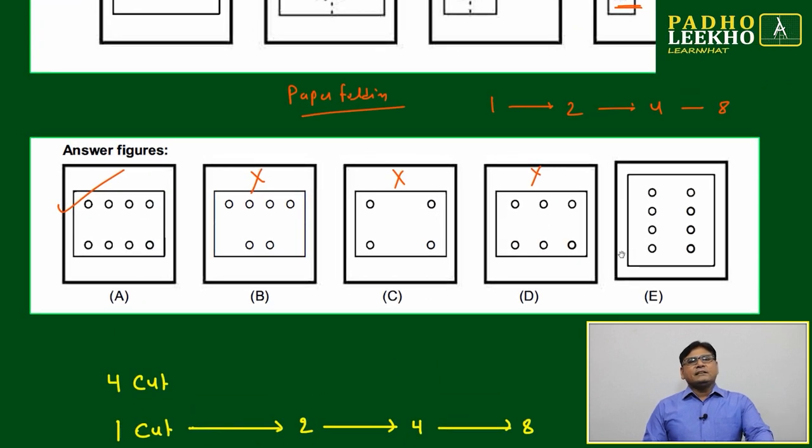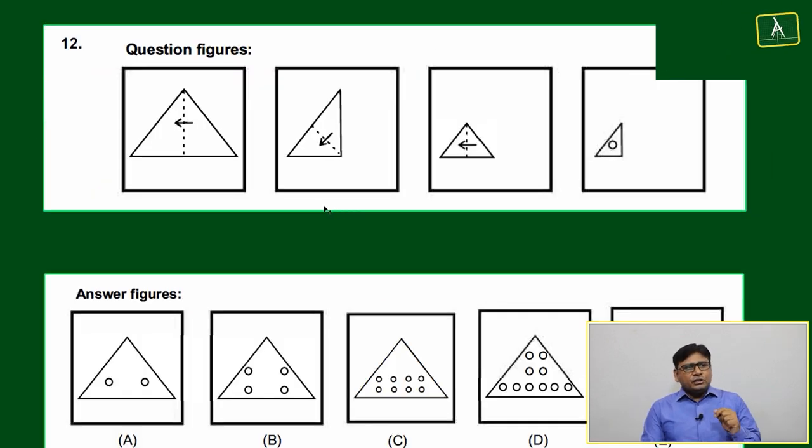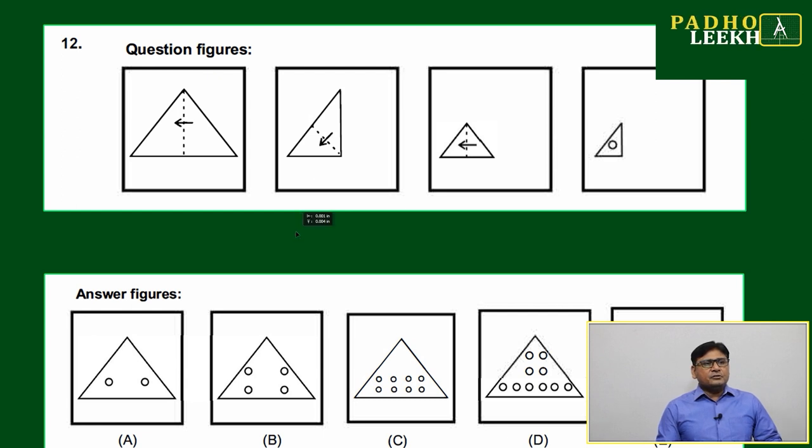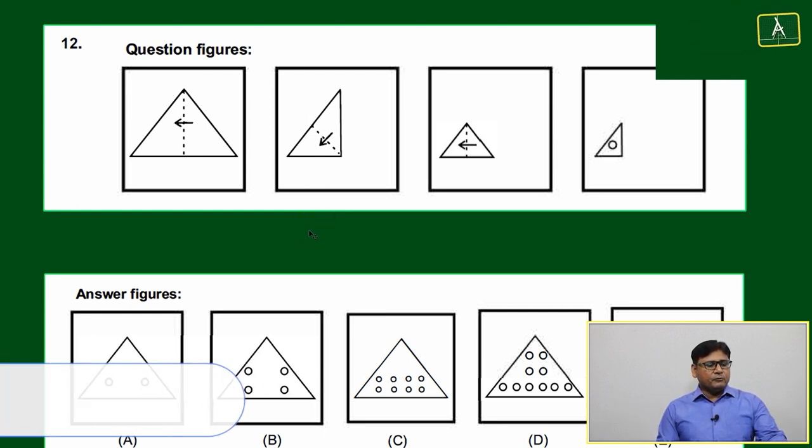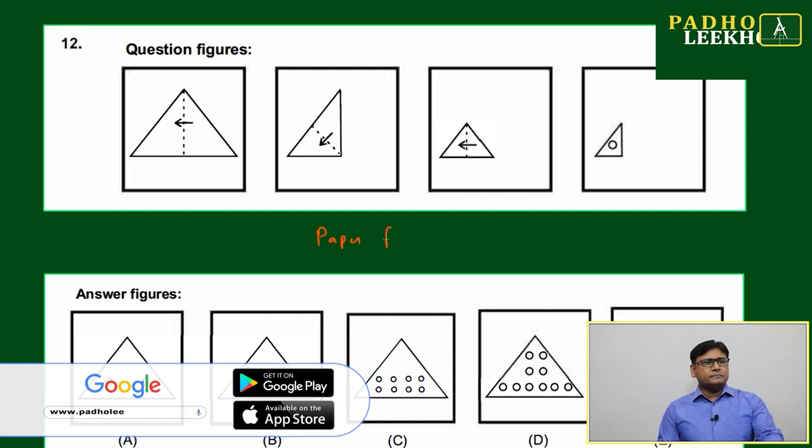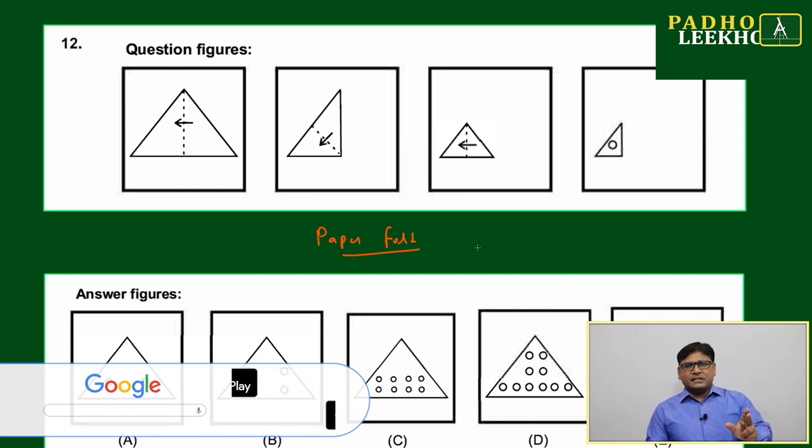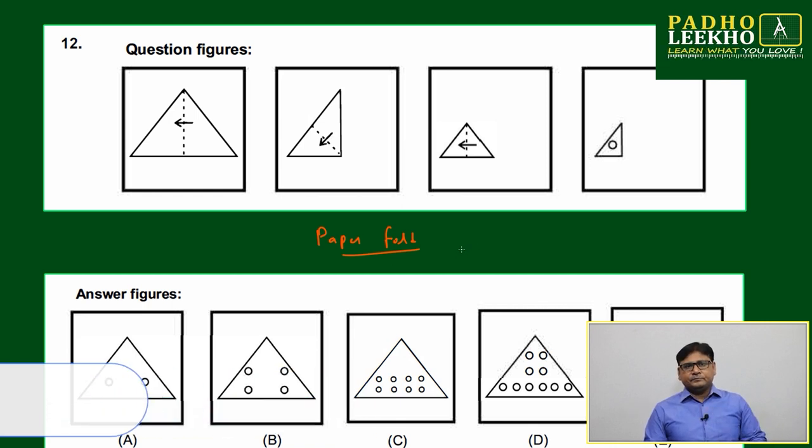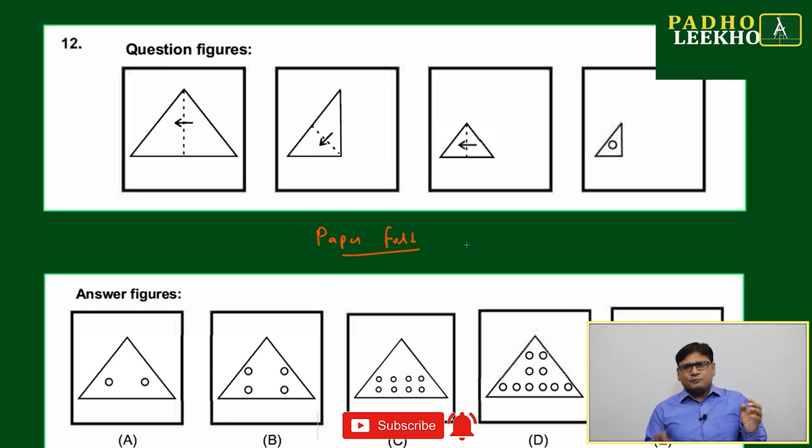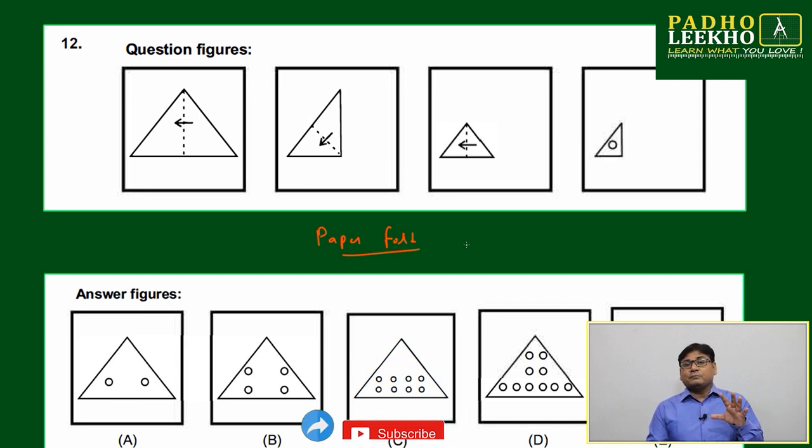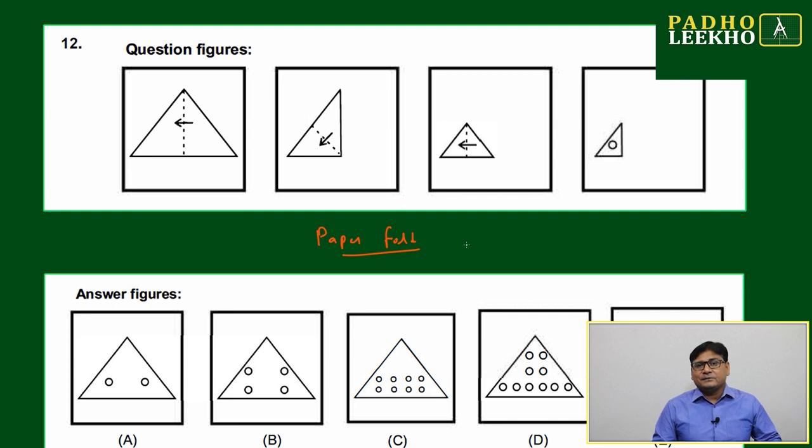Now we'll come to question number 12, which is also based on paper folding. Paper folding and unfolding mainly involves three types of activity: one is folding, next is cutting, and next is punching. These three are maximum activities. Most of the times folding and punching, sometimes folding and cutting, but all three generally will not be given because it will become much more complicated for imagination. Now here, how many foldings are there?